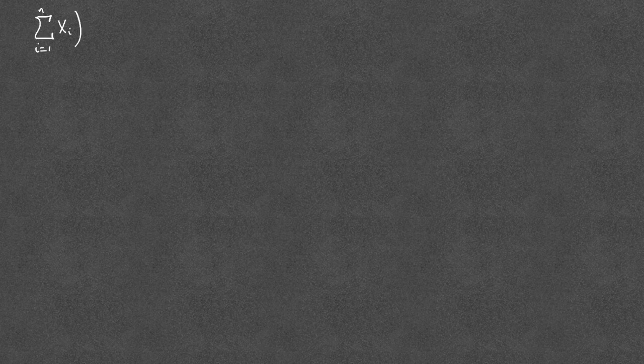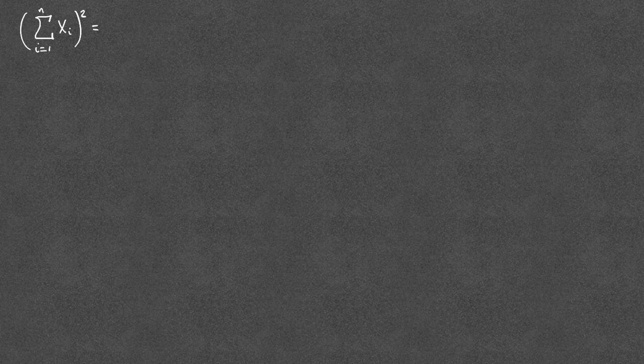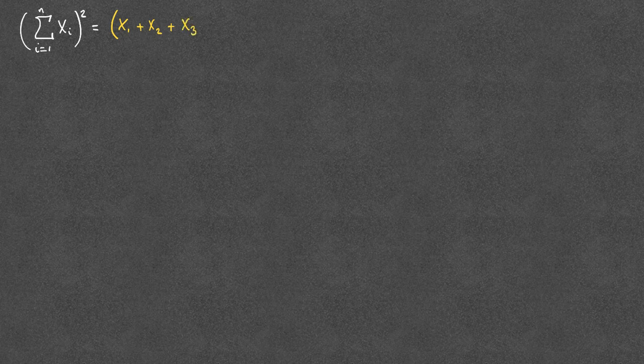So we're faced with a problem: how do we find the sum of xi squared? When we're dealing with these sorts of problems, it's often useful to start by writing this down in as much detail as we possibly can. So the sum of the xi's is going to be x1 plus x2 plus x3 plus x4, all the way up to xn.